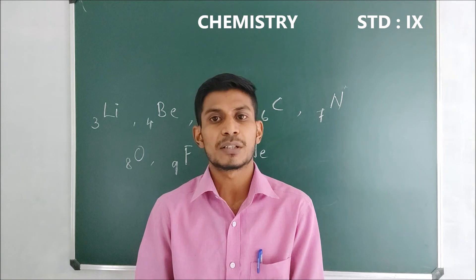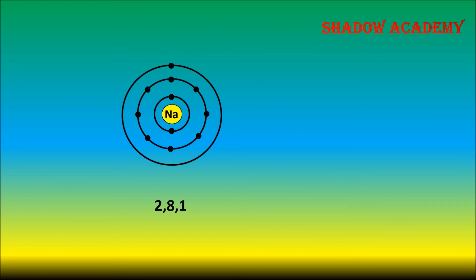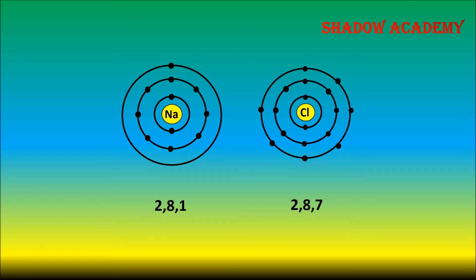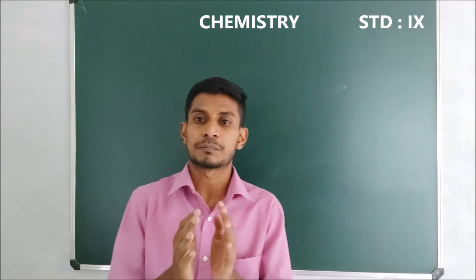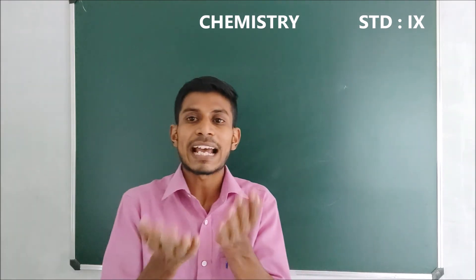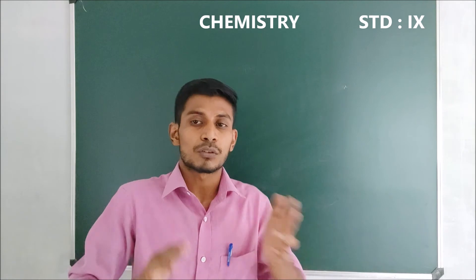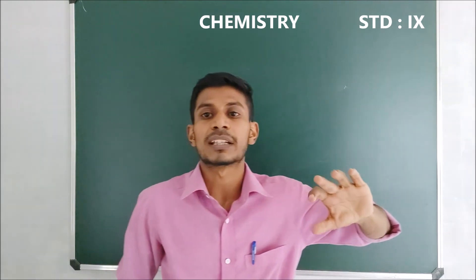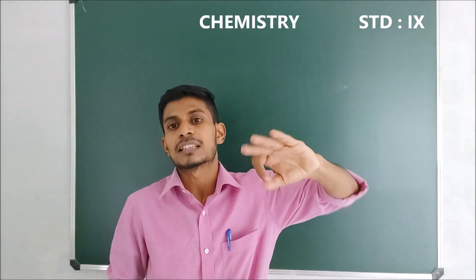Now let me show you a video of how sodium chloride is formed by the combination of sodium and chlorine. In this process, which atom donates the electron? Very good — sodium donates the electron. Which one accepts the electron? Very good — the chlorine atom accepts the electron. So sodium donates electrons and chlorine receives electrons.